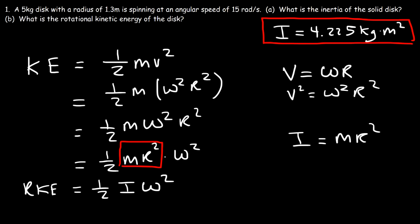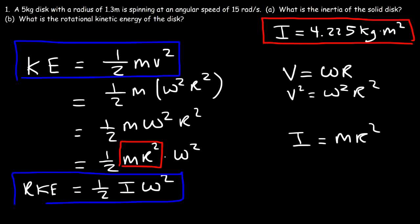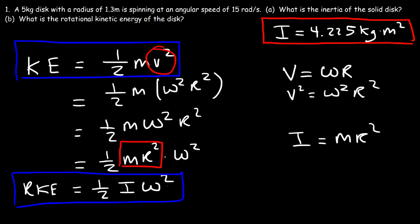Notice the similarities between this equation and the kinetic energy equation. In both cases we still have the fraction one half. Now instead of mass we have rotational inertia, and instead of linear speed we have angular speed. This is the equation that we need to calculate the rotational kinetic energy of an object.